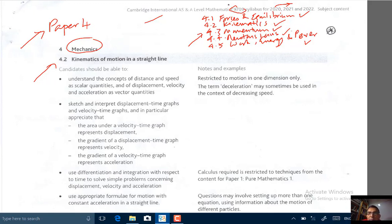Let me just go through them again. 4.1 we have forces and equilibrium, 4.2 we have kinematics, motion in a straight line, 4.3 momentum, 4.4 Newton's laws of motion and 4.5 work energy and power. So five topics and this is the addition, 4.3 momentum.